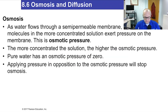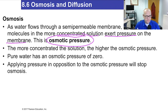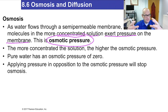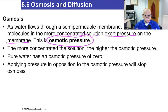Here's osmotic pressure - let's read the definition the book gives. As water flows through a semi-permeable membrane, the water molecules in the more concentrated solution exert pressure on the membrane. The water inside the cell gets more and more, the cell gets more and more rigid. Those water molecules need room - if a cell is so filled with water, the water inside will literally block the water on the outside from coming in. That's osmotic pressure - it's the back pressure exerted after osmosis has occurred. It's one of the more challenging things for students to understand.